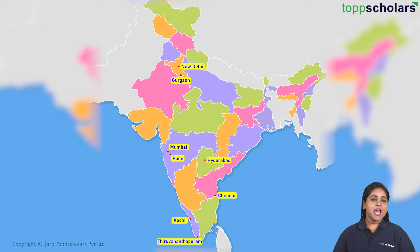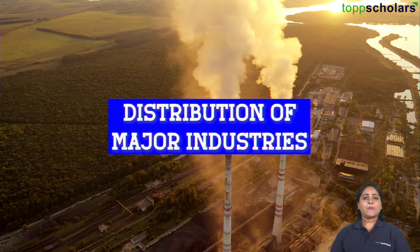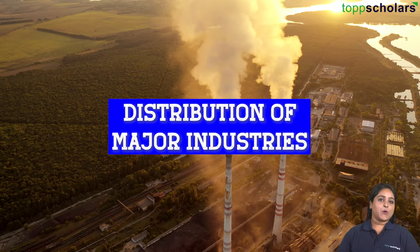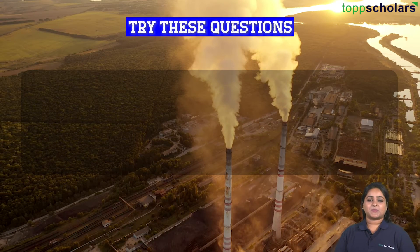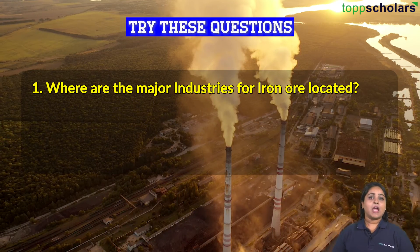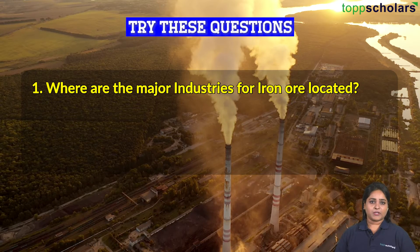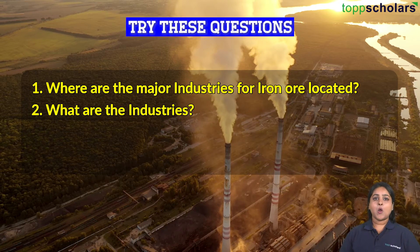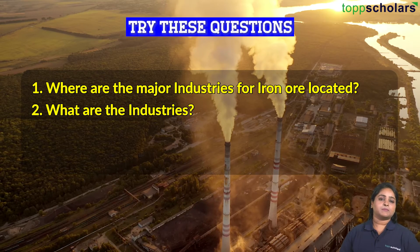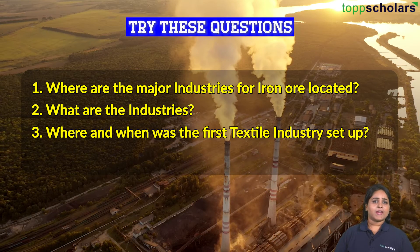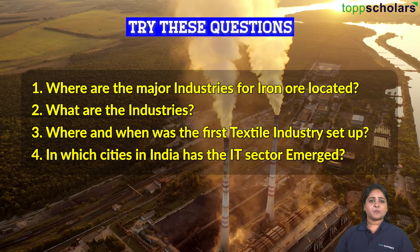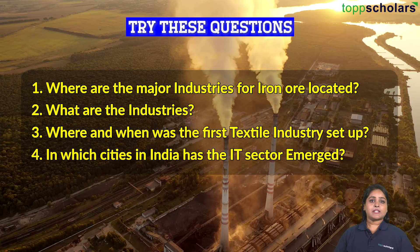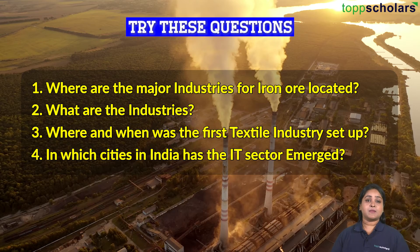Other IT centers include Thiruvananthapuram, Kochi, and Chandigarh. With these, we come to the end of this session. Review questions: Where are the major iron and steel industries located? What are industries? Where and when was the first textile industry set up? In which cities has the IT sector emerged in India?